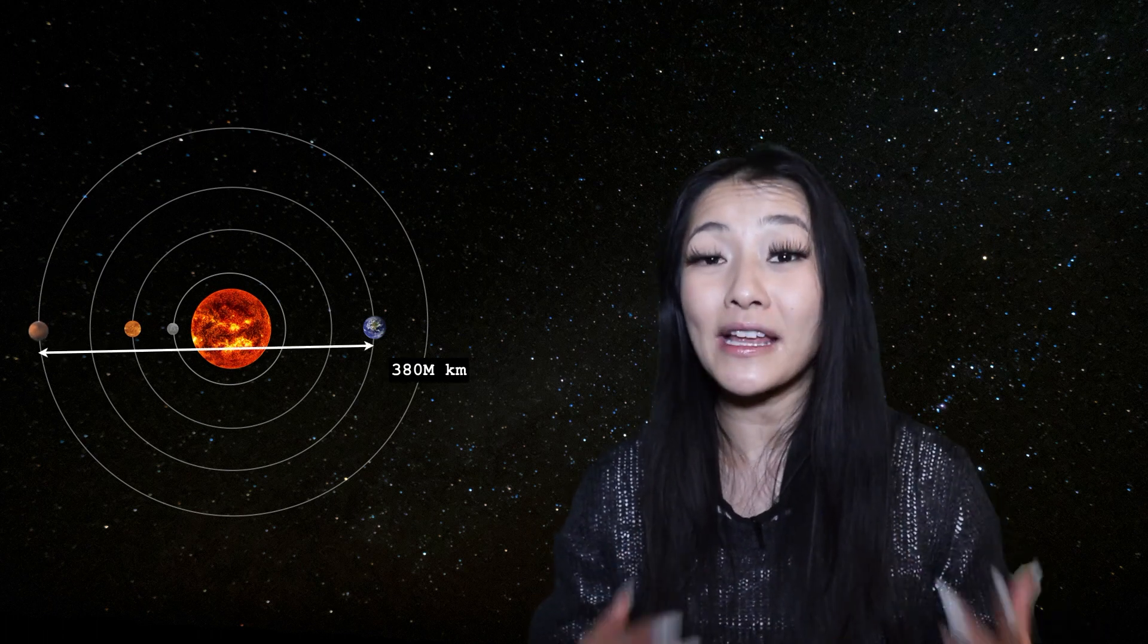Similarly for Mars, the closest distance to Earth is 80 million kilometers, but the furthest away that Mars can get is on the opposite side of the Sun when it can reach 380 million kilometers.